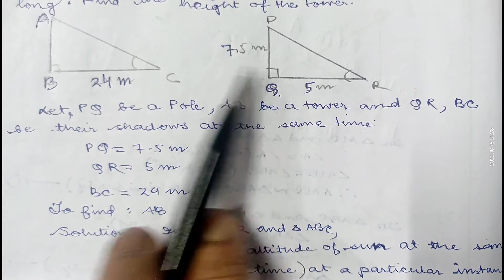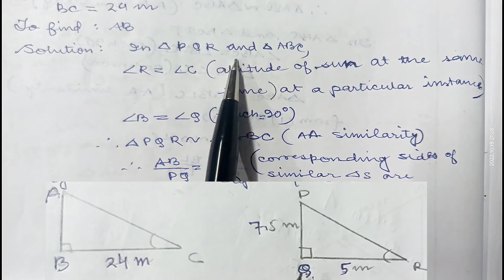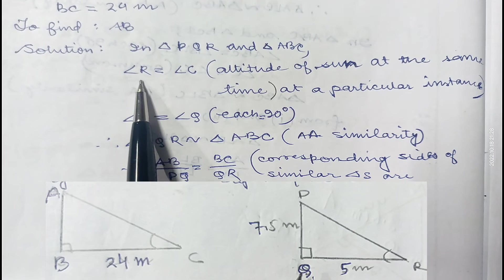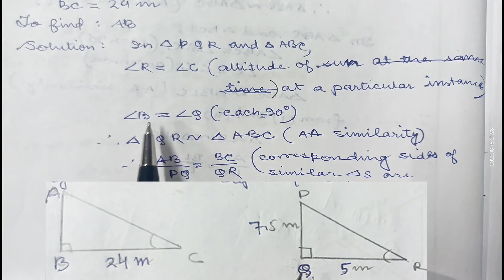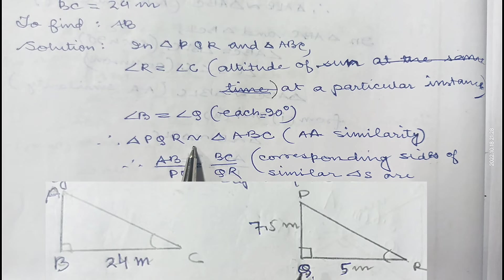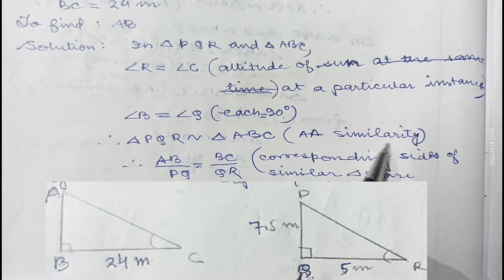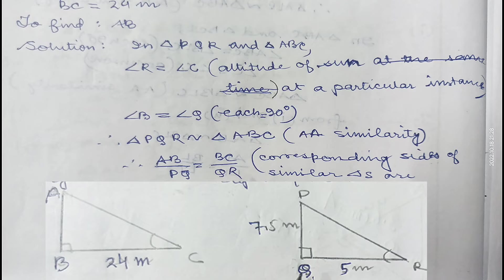Therefore these two triangles are similar. In triangle PQR and triangle ABC: angle R equals angle C because the altitude of the Sun at a particular instance is the same, and angle B and angle Q are both equal to 90 degrees. Therefore triangle PQR is similar to triangle ABC by the Angle-Angle similarity criterion. Since the triangles are similar, their corresponding sides are proportional, so we can write AB by PQ equals BC by QR.